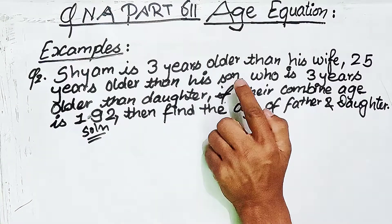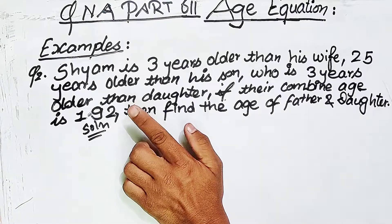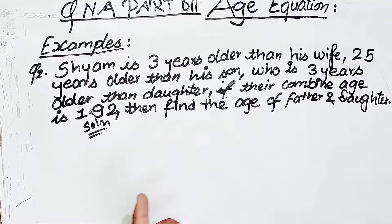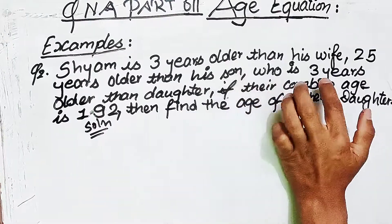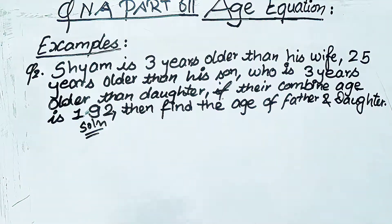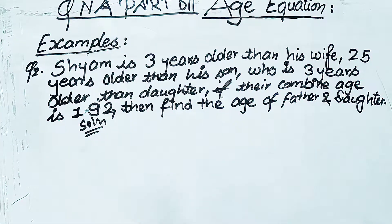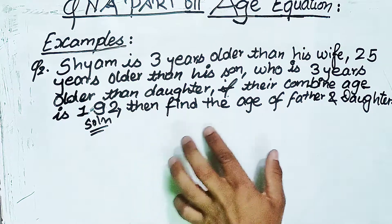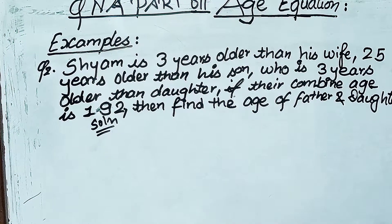Sam is 3 years older than his wife, who is 3 years older than his daughter. If their combined age is 192, then find the age of the father and daughter. We have to make a factor of the same.